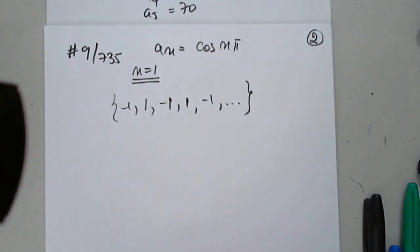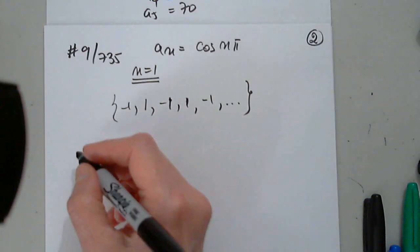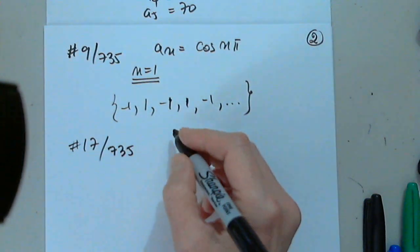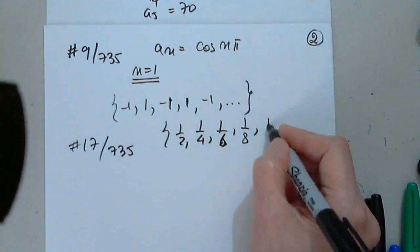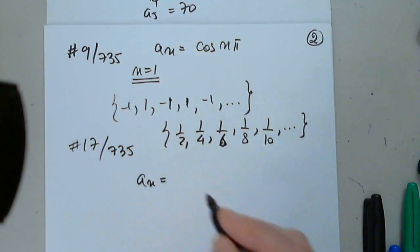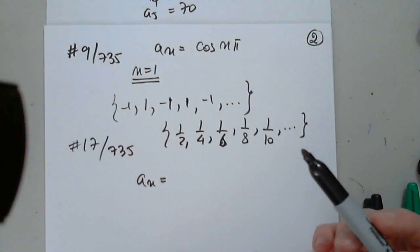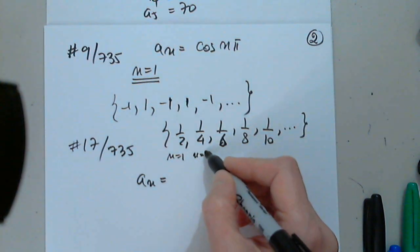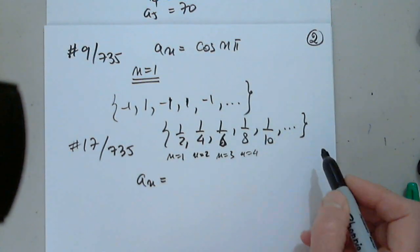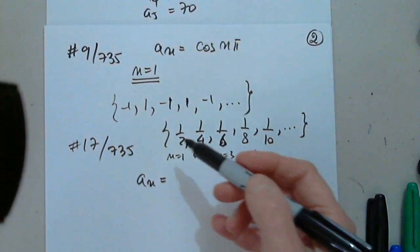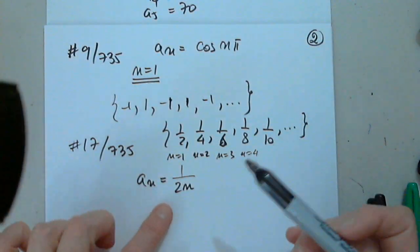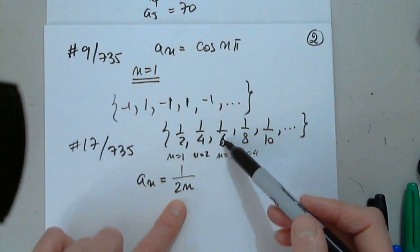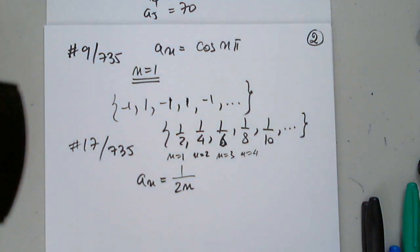Now let's find the general formula — the formula for the general term. Number 17 on page 735: we are given 1/2, 1/4, 1/6, 1/8, 1/10, dot dot dot. We notice this is the first term when n is 1, the second term, the third term, and so on. Let's try 1 over 2n. When n is 1, do I get 1/2? Yes. When n is 2, do I get 1/4? Yes. When n is 3, do I get 1/6? Yes. So 1/(2n) is the general term of this sequence.